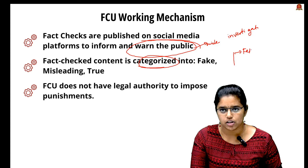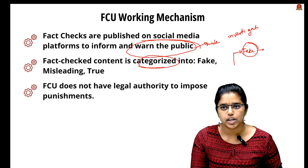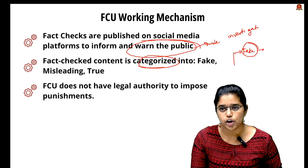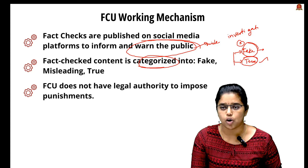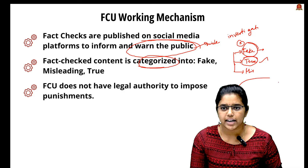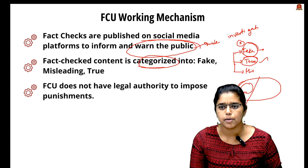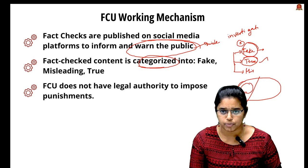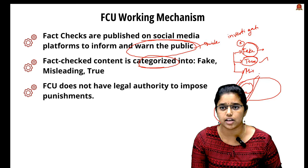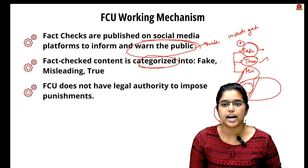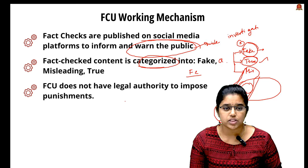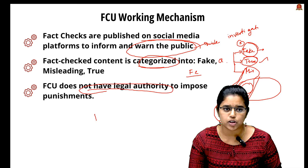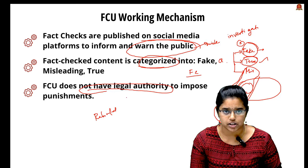Queries are categorized into three types: first, 'fake' — where information is totally factually wrong and can mislead the public causing socio-economic conflicts. Second, 'true' — factually and legally correct, so no action is taken. Third, 'misleading' — where only partially true information is presented which can affect public decision-making. The FCU does not have legal authority to impose punishment; it can only publish rebuttals and provide accurate information.